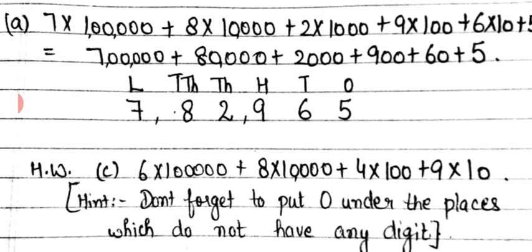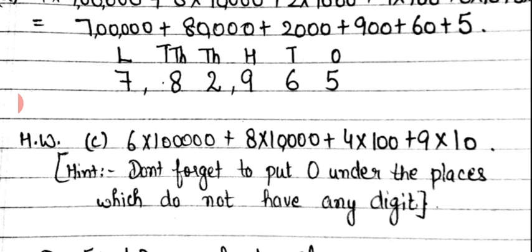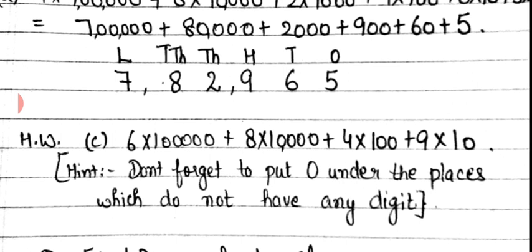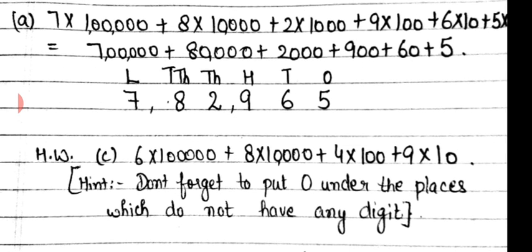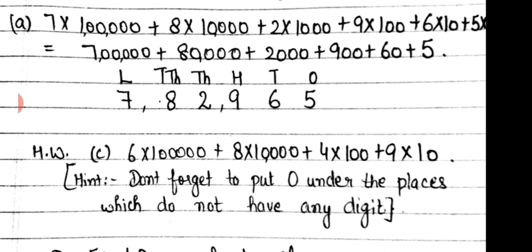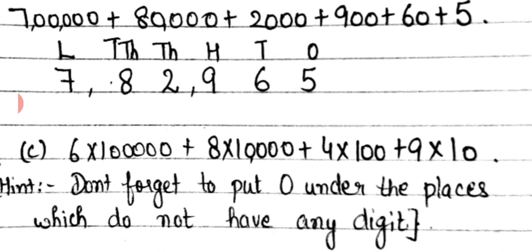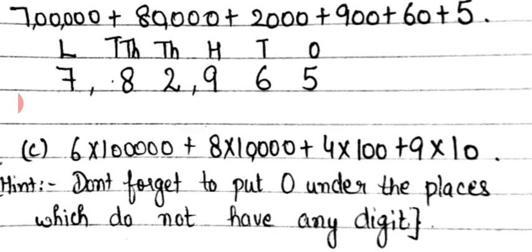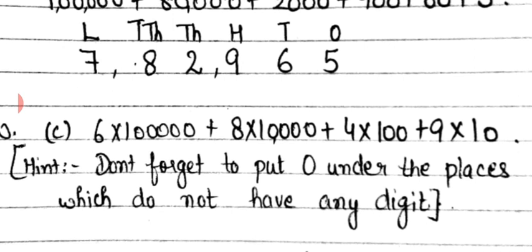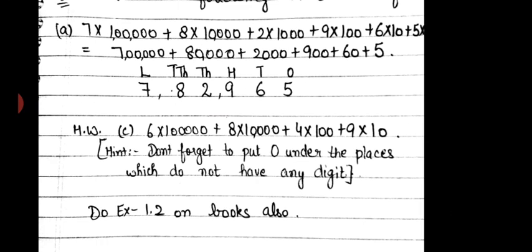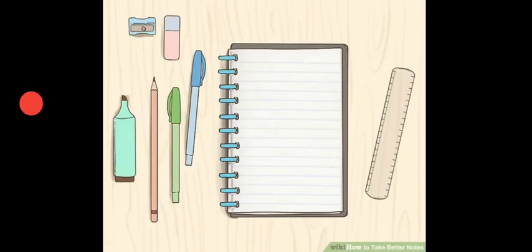I have given you the C part as homework with one hint: don't forget to put 0 under the places which do not have any digit. You will do the first step as I have done in the A part, but when you write the second step — after writing the places — if some place is missing, like if 1,000 place and 1's place are not given in the question, you will write 0 under those places.